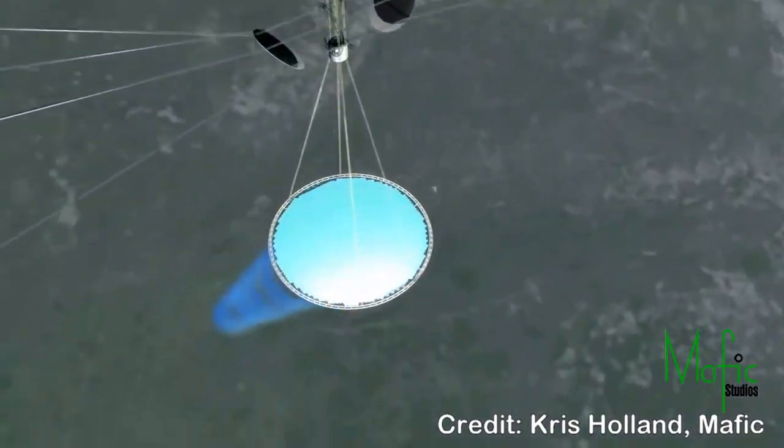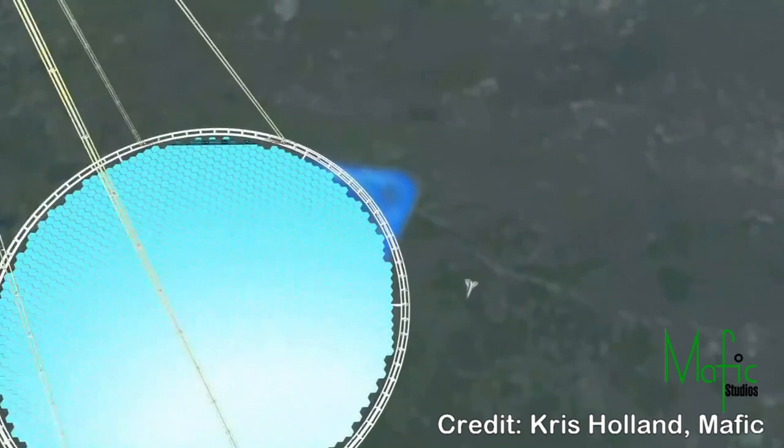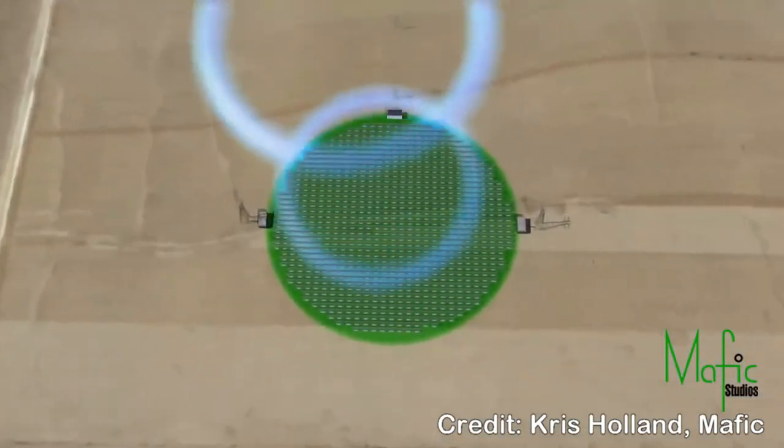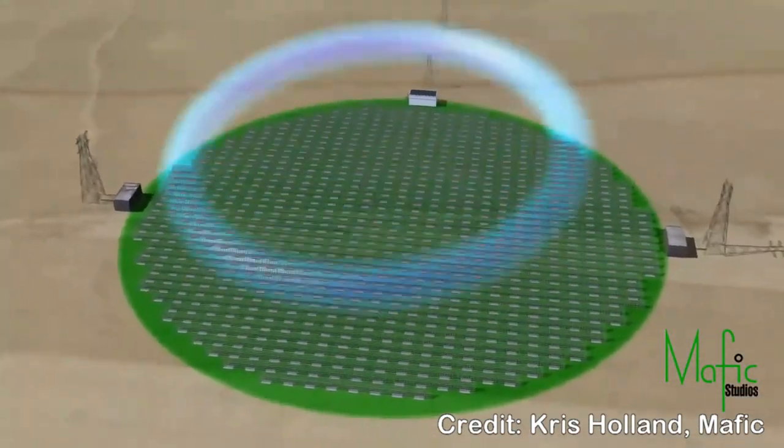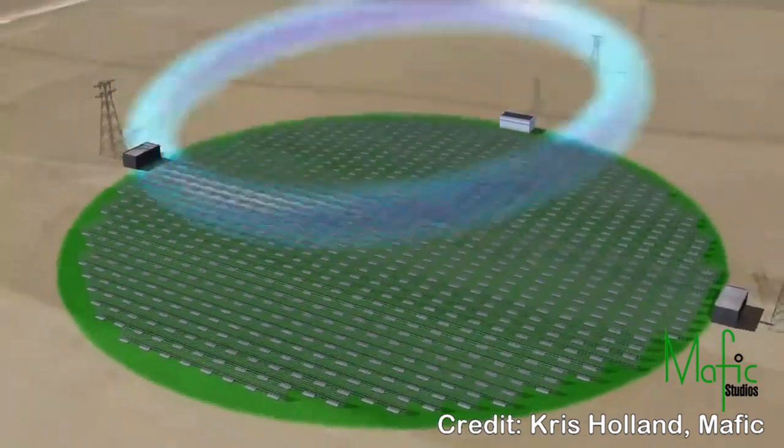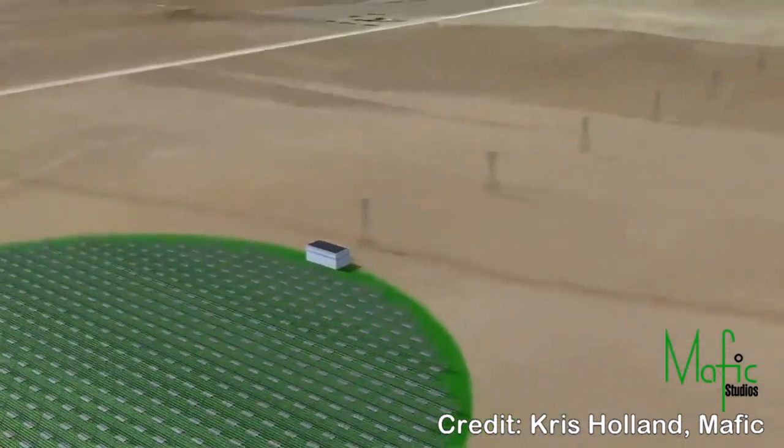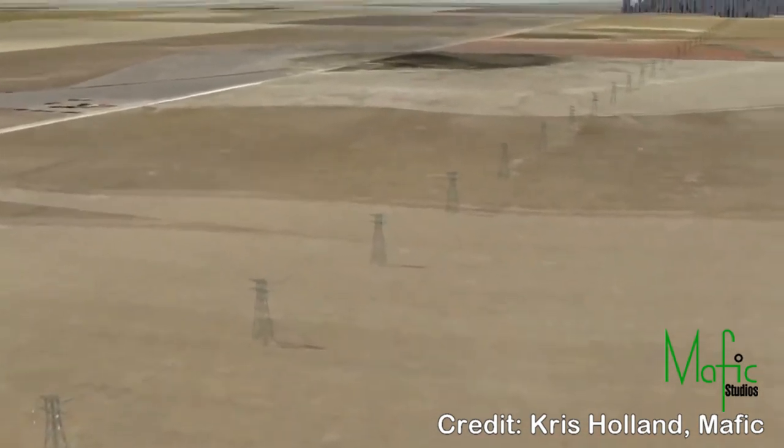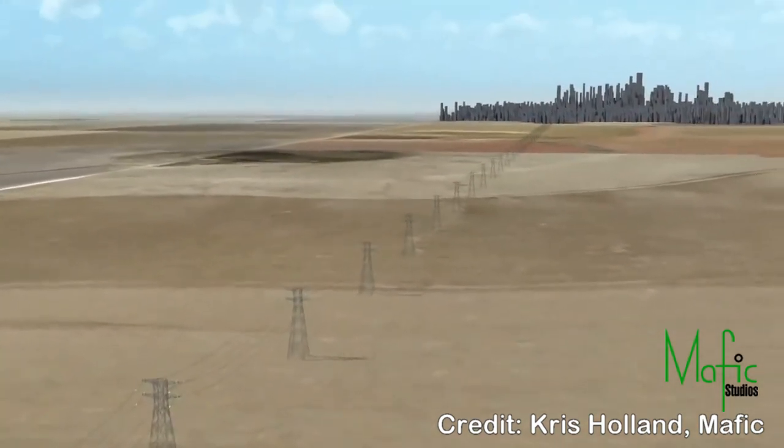That's an ample and nigh inexhaustible supply too, but as tremendous as the amount of energy hitting our planet is, the Sun itself produces over 2.2 billion times the light that hits Earth, and a quadrillion times what we use to run our technology and civilization.